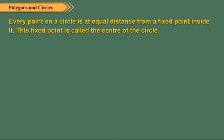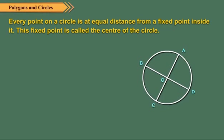Every point on a circle is at equal distance from a fixed point inside it. This fixed point is called the center of the circle. In this circle, A, B, C, D are any 4 points on the circle. O is a fixed point inside it. On measuring we see that A, B, C and D are at equal distance from O. So O is the center of the circle. Note that a circle cannot have more than one center.